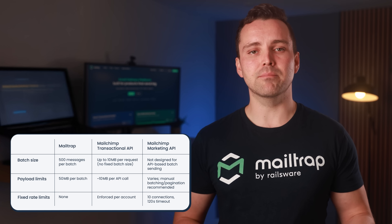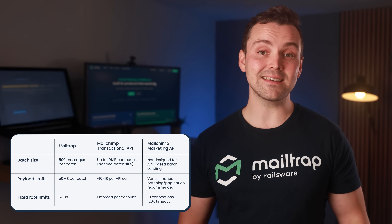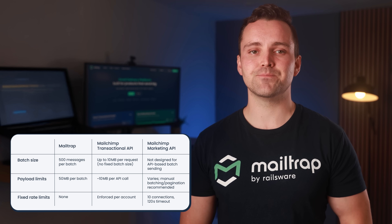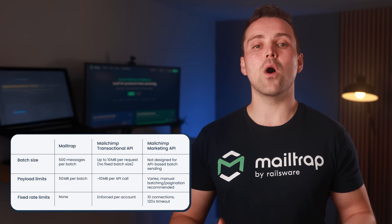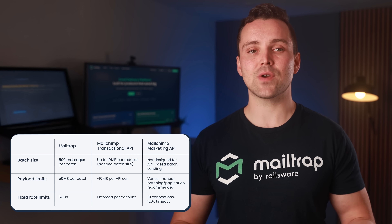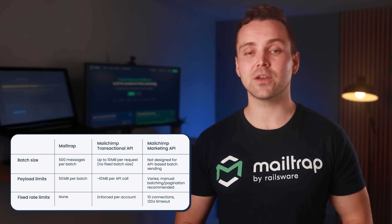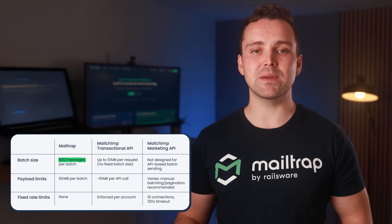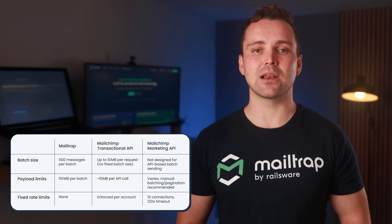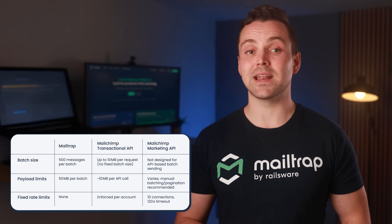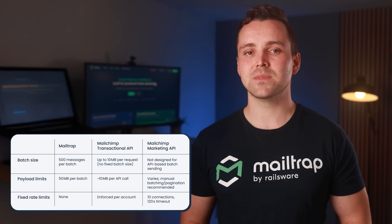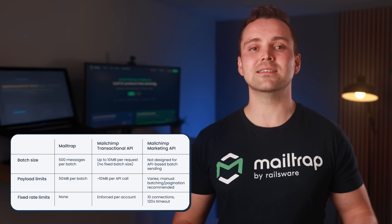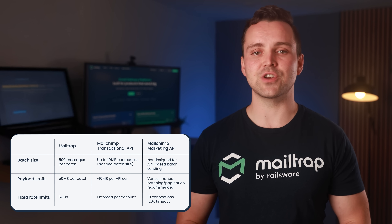MailTrap and MailChimp both offer sending APIs, but they're designed for very different use cases. MailTrap is optimized for high-volume transactional, bulk, and marketing sends. It supports up to 500 messages per batch, allowing payloads of up to 50 megabytes, and has no fixed rate limits. That means your app can send at scale without hitting delivery limits or rewriting logic.